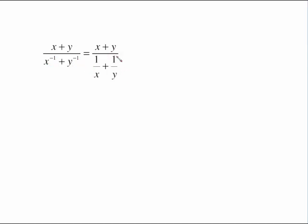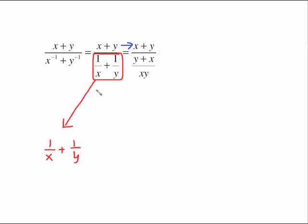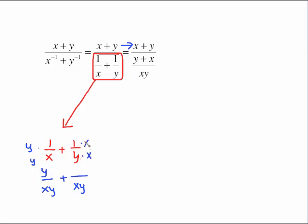The top is okay for right now — just focus on the bottom. The bottom has a fraction plus a fraction, so we need to go through the common denominator process. The two monomial denominators will be multiplied together to give a common denominator of xy. For the first fraction, to make x become xy I need to multiply top and bottom by y, so y times 1 is y. For the second fraction, multiply top and bottom by x, so x times 1 is x.